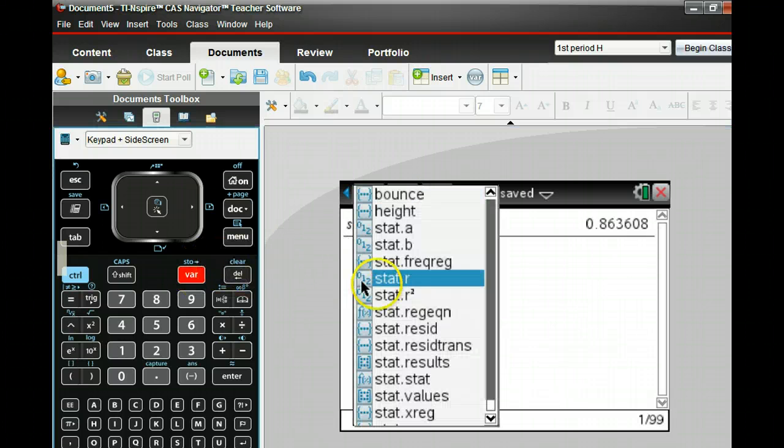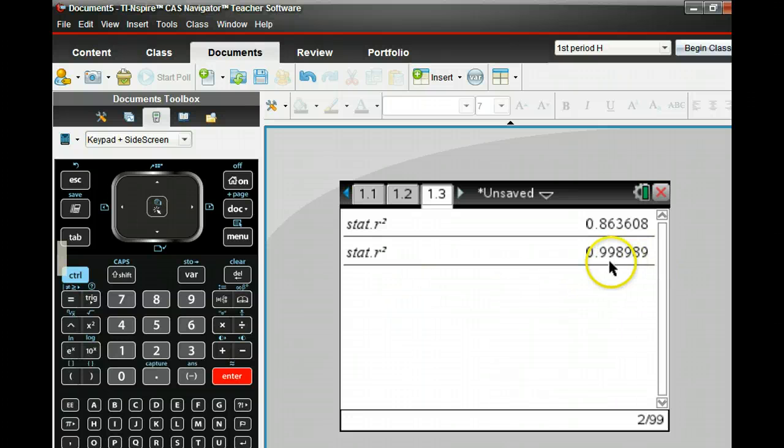If I hit the variable key and do R squared, now it's .998. I'd say that's a very good fit.